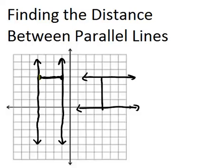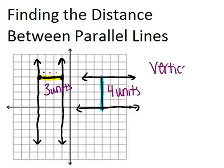In the example on the left, the distance between these two lines is three units, because if you count, there's one, two, three units between them — the little segment perpendicular to both of them is three units long. For the case of the horizontal lines, the vertical line that shows the shortest distance between those two lines is four units long, so the distance between those two lines is four units. Basically, if the lines are vertical or horizontal, all you need to do is count the spaces between them.